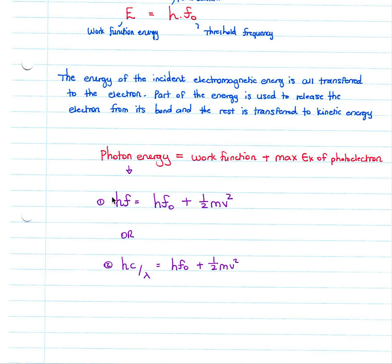So HF — our photon energy — equals HF-naught, which is our work function energy, plus our maximum EK, which is simply half MV squared from our kinetic energy formula. This can also be written as H times C over wavelength, because we know that E equals H times C over our wavelength.